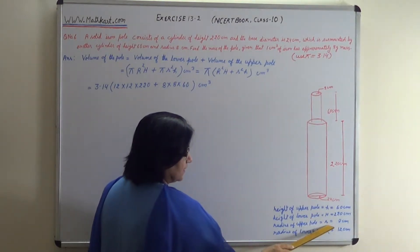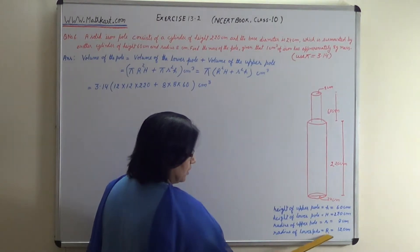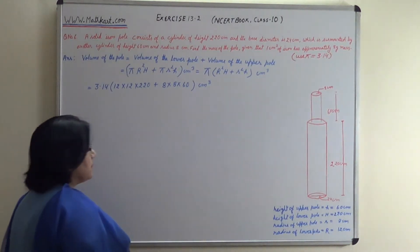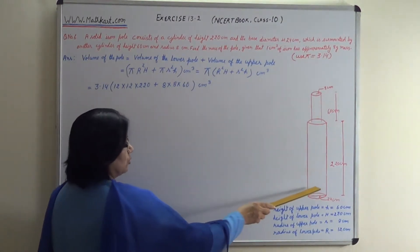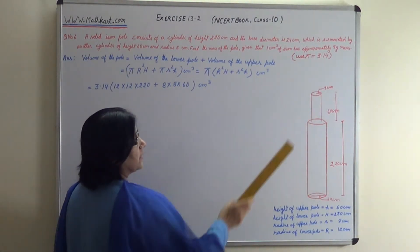Small r denotes 8 cm, radius of the lower pole capital R equals 12 cm. Now if we calculate the volume of both poles...